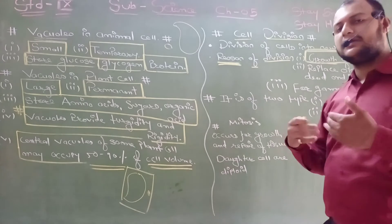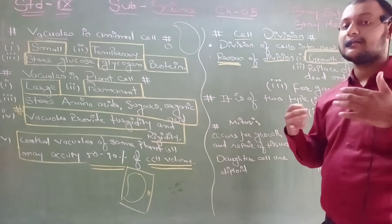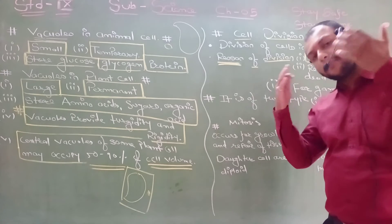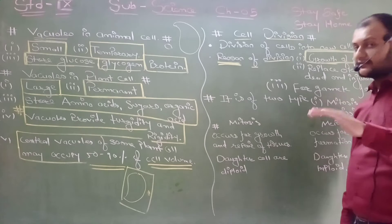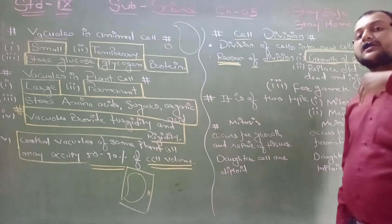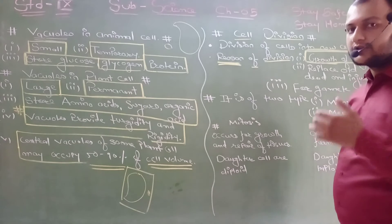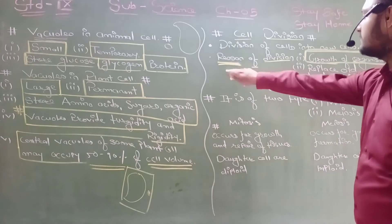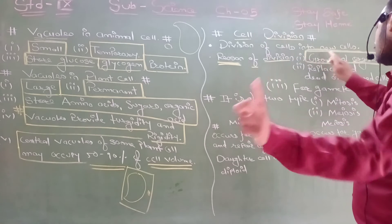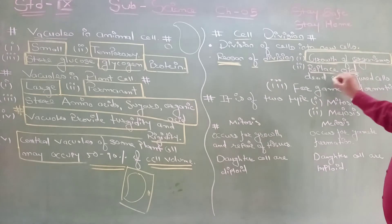As the organism grows slowly, the number of cells increases. At the same time, some cells die or stop functioning and need to be replaced. So the second reason for cell division is to replace old, dead, and injured cells.